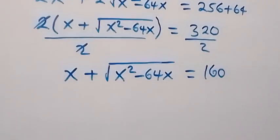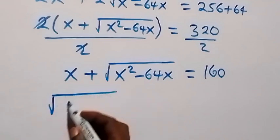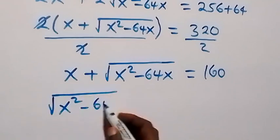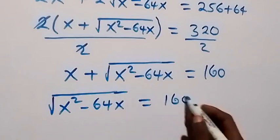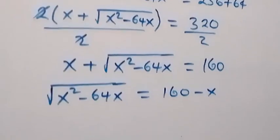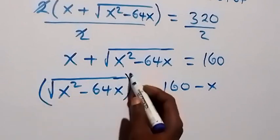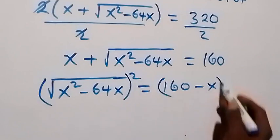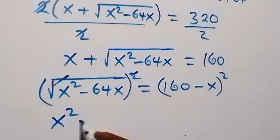From here we can take x to the other side to make our work easier. So we have √(x² − 64x) equals 160 − x. Then we take the square on both sides. Squaring the left side cancels the square root, leaving x² − 64x.